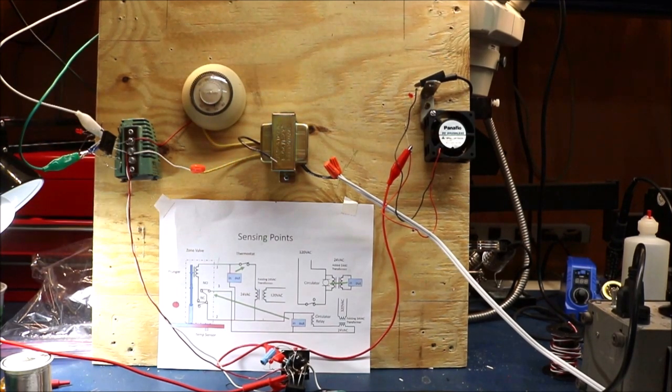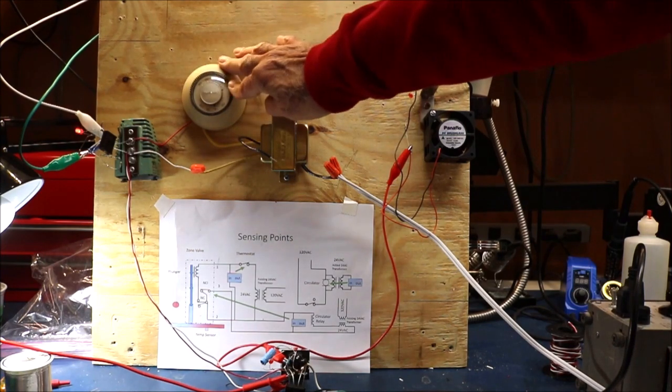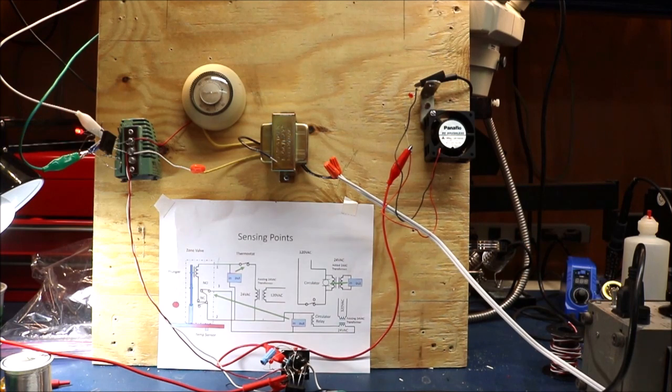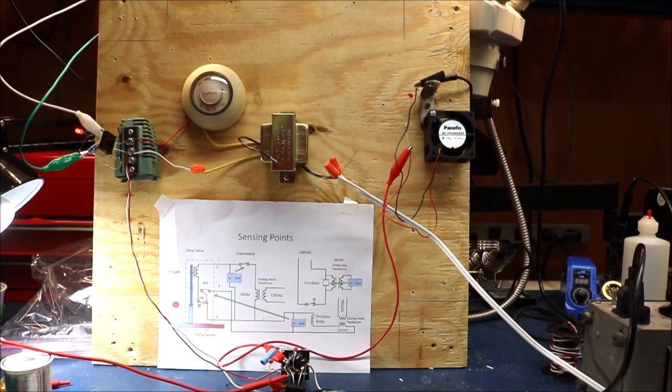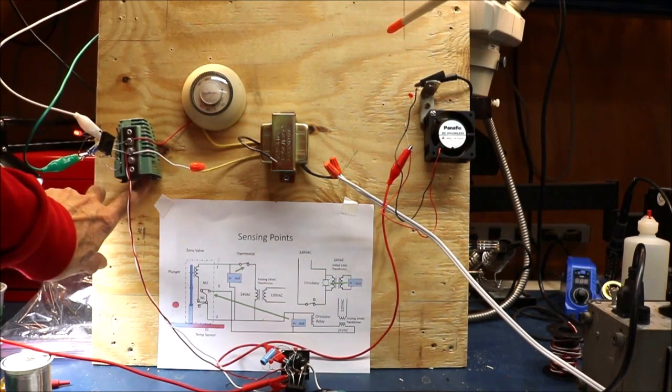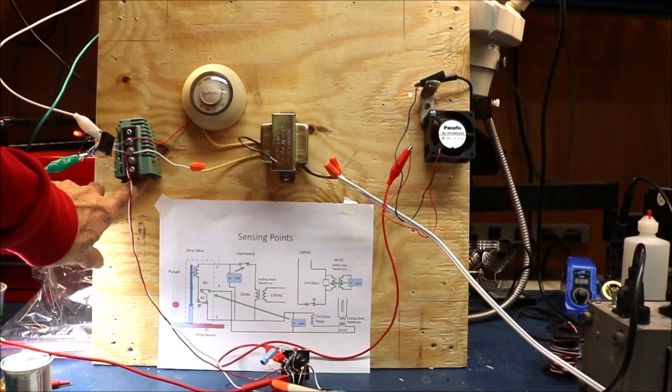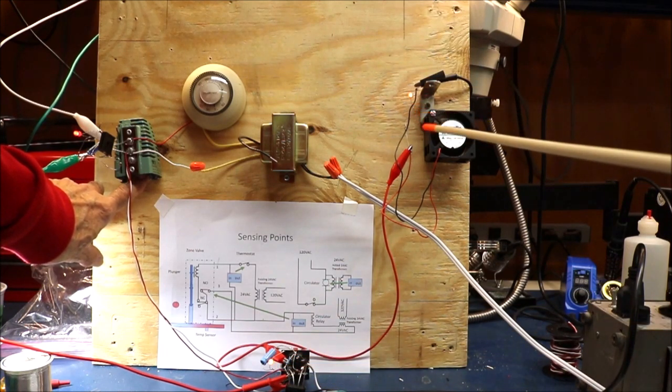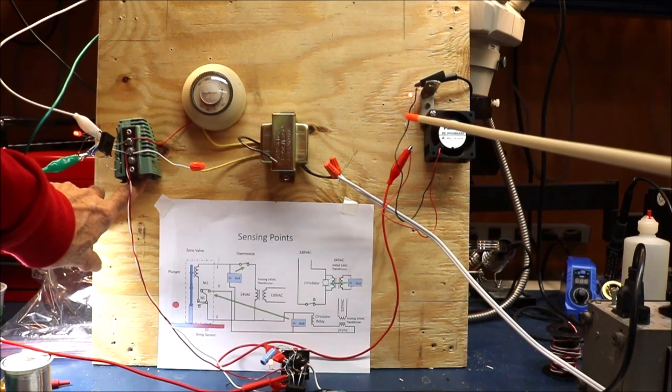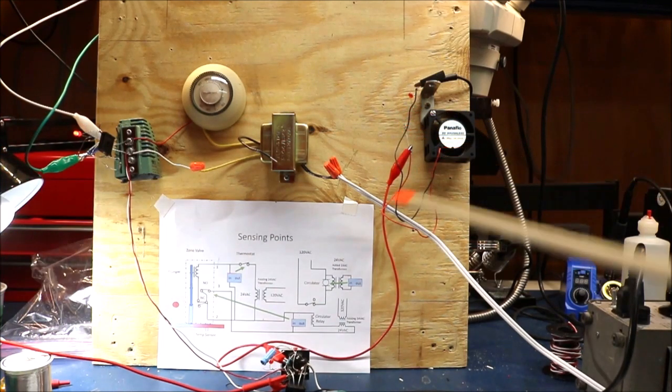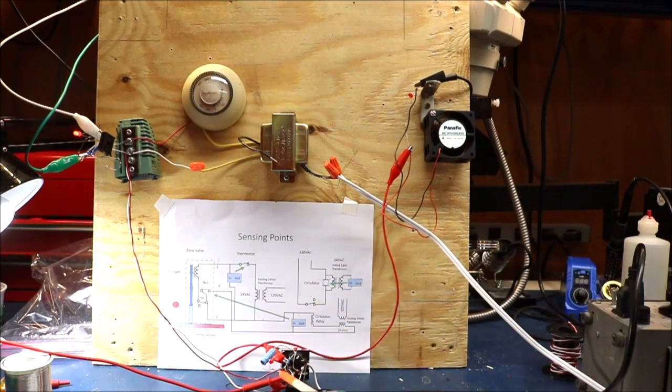First thing I'm going to do is turn on the thermostat. And you see the light here, which is what we said would happen. So now, if I manually close these contacts here, the circulator contacts in the zone valve, you can see the light on the circulator relay comes on down here. And the light on the circulator, or the fan, comes on as well. And when the contacts come off, both the circulator relay is not energized and therefore the circulator is not energized either.